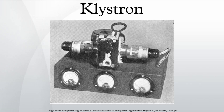A klystron is a specialized linear beam vacuum tube, invented in 1937 by American electrical engineers Russell and Sigurd Varian, which is used as an amplifier for high radio frequencies, from UHF up into the microwave range.